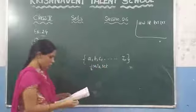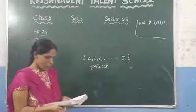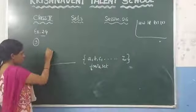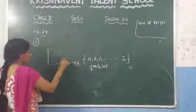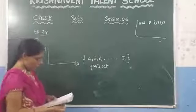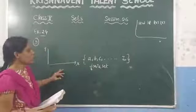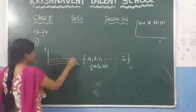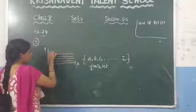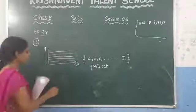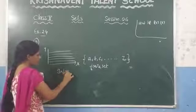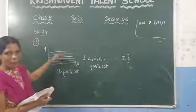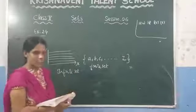The second question: the set of lines which are parallel to the x-axis. You know this is the x-axis and this is the y-axis. You can draw many lines parallel to the x-axis — these are all lines parallel to the x-axis. So we can say it is an infinite set, because we cannot count the number of parallel lines present in the set.